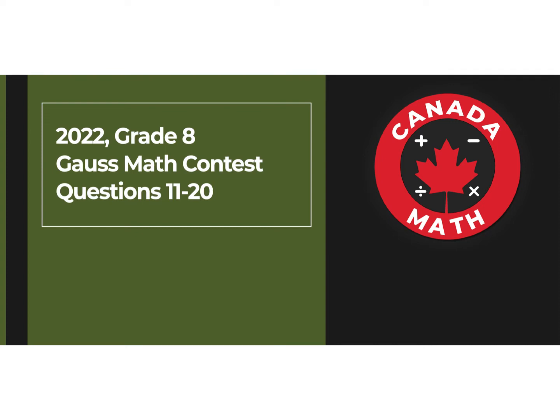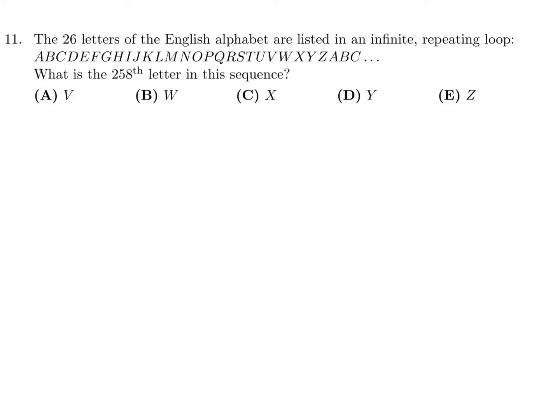2022 Grade 8 Gauss Math Contest, Questions 11 through 20. The 26 letters of the English alphabet are listed in an infinite repeating loop. What is the 258th letter in this sequence?